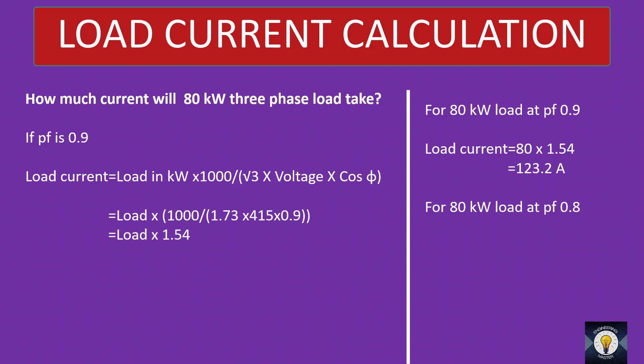For an 80 kW load at power factor 0.9, the load current is 80 into 1.54 — that is 123.2 ampere. For 80 kW at power factor 0.8, the multiplier is 1.74, so 80 into 1.74 gives 139.2 ampere. You don't need a scientific calculator at all to derive the current rating — just remember the multiplier and multiply the load by this value.